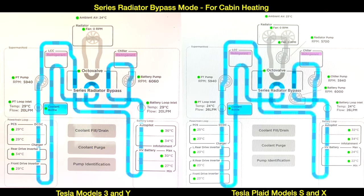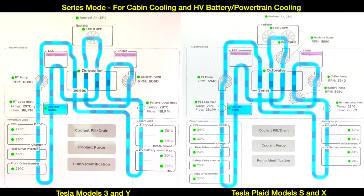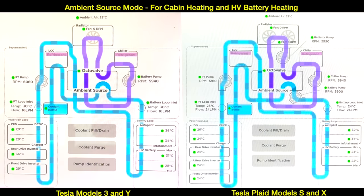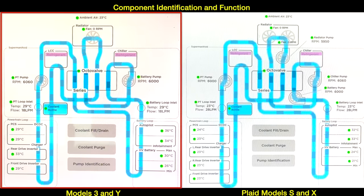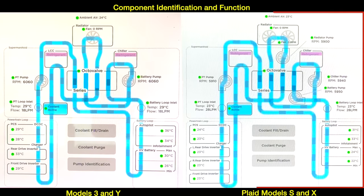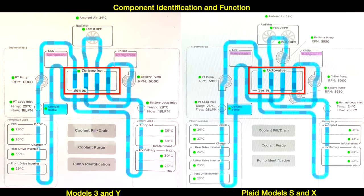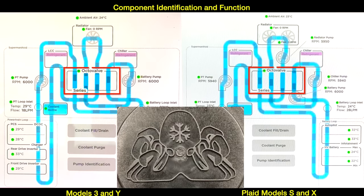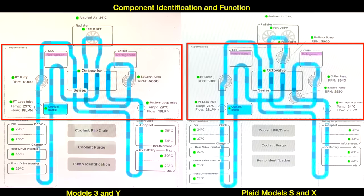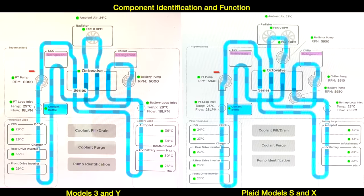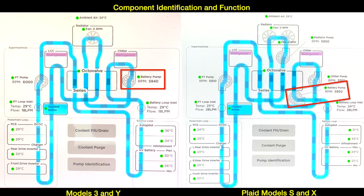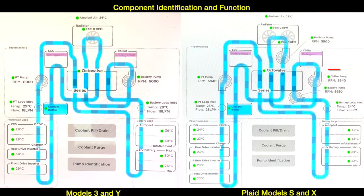Let's take a quick look at the four different paths for coolant flow in a Tesla with a heat pump system. We are looking at screen recordings in the service mode from the Tesla Model 3 and Y on the left and the Plaid Model S and X on the right. The flow of coolant is controlled by an eight-way valve called the octo valve. The octo valve is located on the super manifold, which contains a powertrain pump, a battery pump, and on the Model S and X there is an additional chiller pump and a radiator pump.